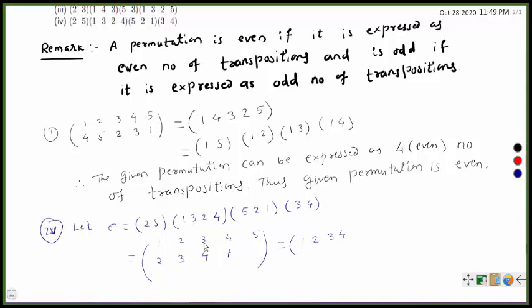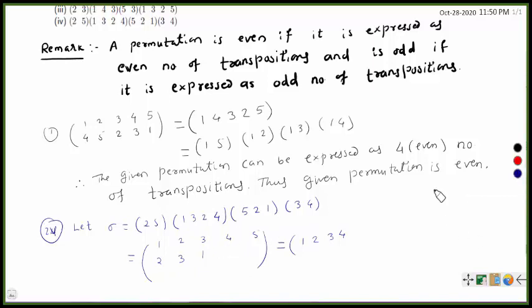Continuing: 2 goes to 3 confirmed. Image of 3 — 3 goes to 4, then 4 goes to 1, so 3 maps to 1. For element 4 — 4 goes to 3, then 3 goes to 2, then 2 goes to 5, so 4 maps to 5. For element 5 — 5 goes to 2, then 2 goes to 4, so 5 maps to 4.